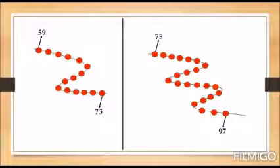Now students look at here, there are two chains. You have to count the numbers between fifty-nine to seventy-three. Start: fifty-nine, then sixty, sixty-one, sixty-two, sixty-three, sixty-four, sixty-five, sixty-six, sixty-seven, sixty-eight, sixty-nine, seventy, seventy-one, seventy-two, seventy-three.